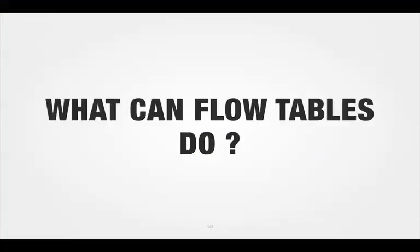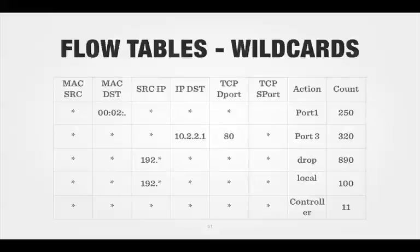What can flow tables do? Let's dive into some sample entries in a flow table so you can imagine what they are like. A lot of people think that every entry in a flow table is explicit — this source MAC address, this destination MAC address, this source port, that destination port. In fact, that's not necessarily true. A flow table is often just full of wildcard entries.